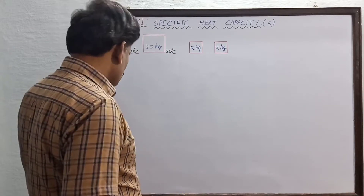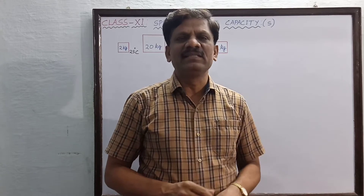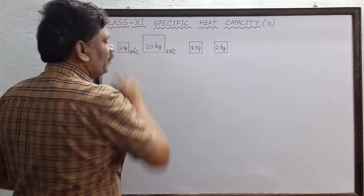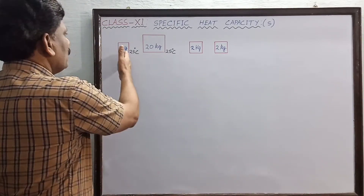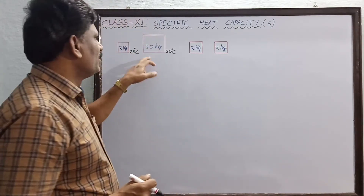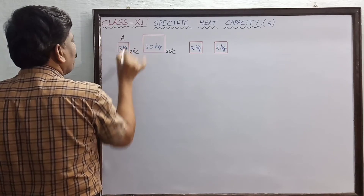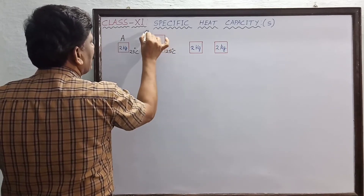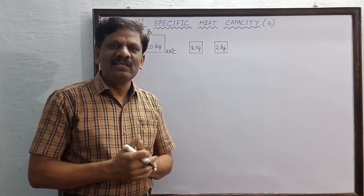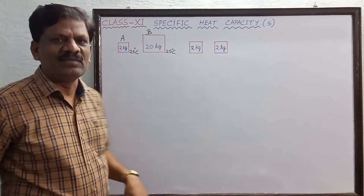It is a very simple concept. Consider two solid bodies: the first solid has a mass of 2 kg and the second body has a mass of 20 kg. Body A has a mass of 2 kg and body B has a mass of 20 kg. Naturally, B is heavier than A.